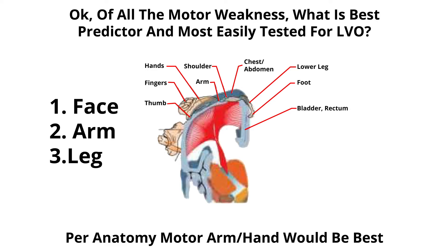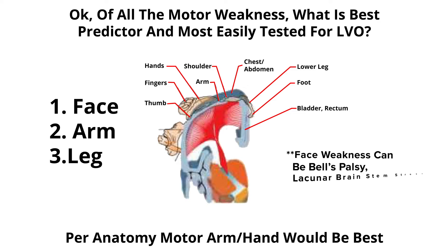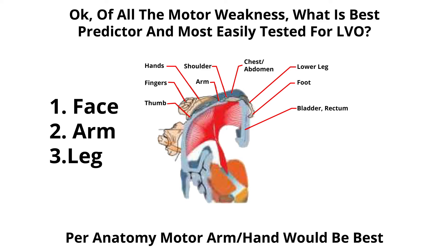Why test arm more than face or leg? Face testing is less specific — Bell's palsy and brainstem small vessel strokes can also involve the face. The leg is typically the last to be affected in anterior circulation large vessel occlusions. The arm provides the best balance between sensitivity and specificity, making it the ideal motor test.